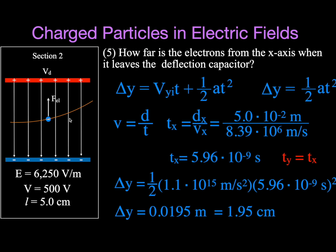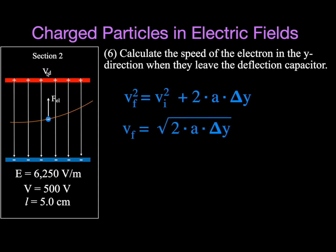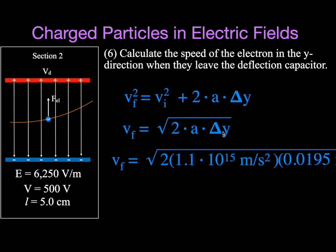Now we want to know the speed when the electron leaves the deflection plates. Using the kinematic equation with zero initial y-velocity, the final velocity in y equals the square root of two times acceleration times distance. We just calculated the distance as approximately 1.95 centimeters, which is 0.019 meters. Taking the square root, the final velocity in the y direction is 6.55 times 10 to the 6 meters per second.